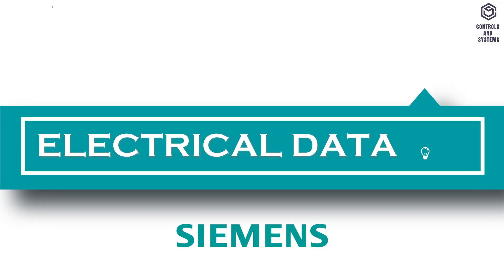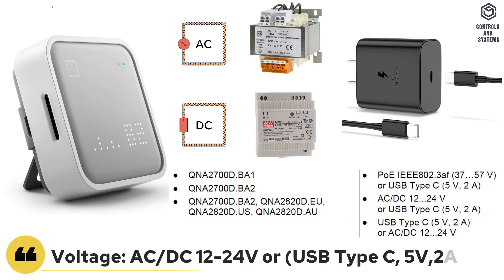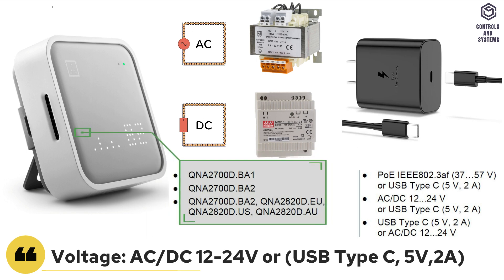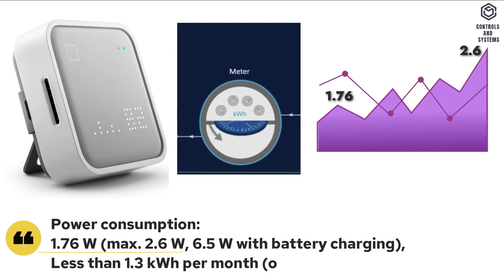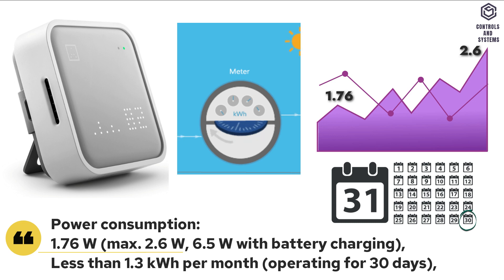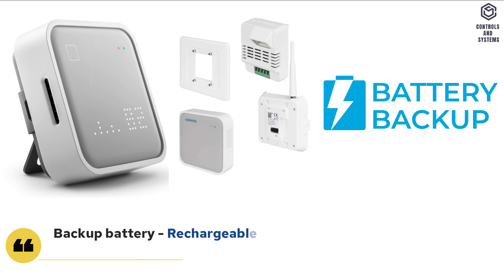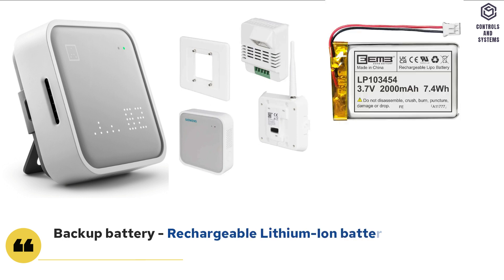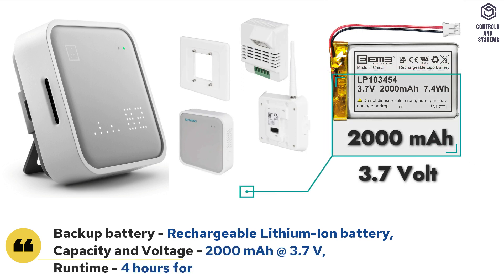Electrical Data: Operating voltage is AC or DC 12 to 24 V, or USB Type-C 5 V at 2 A, depending on the model. Power consumption in operating mode is 1.76 W; operating for 30 days is less than 1.3 kWh. The sensor module has a built-in backup battery — a rechargeable lithium-ion battery with a capacity of 2000 mAh and voltage of 3.7 V.